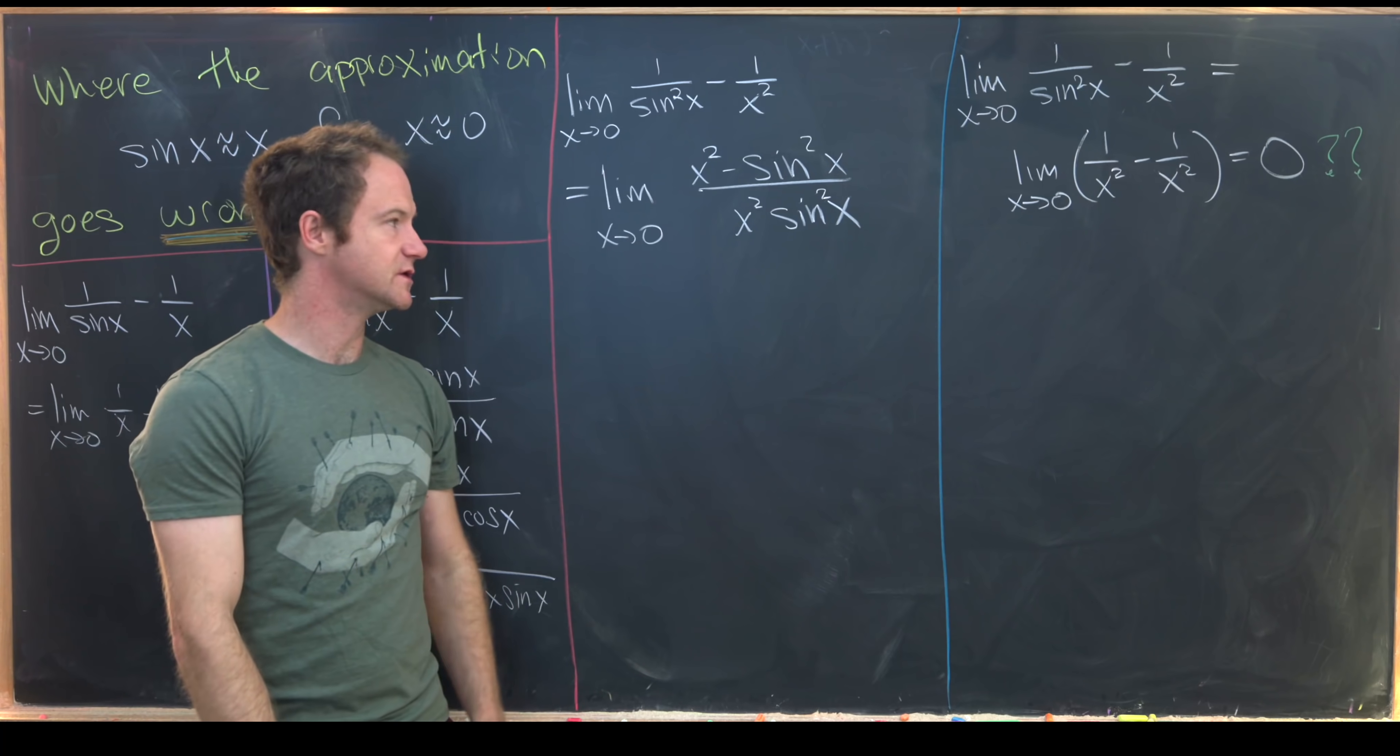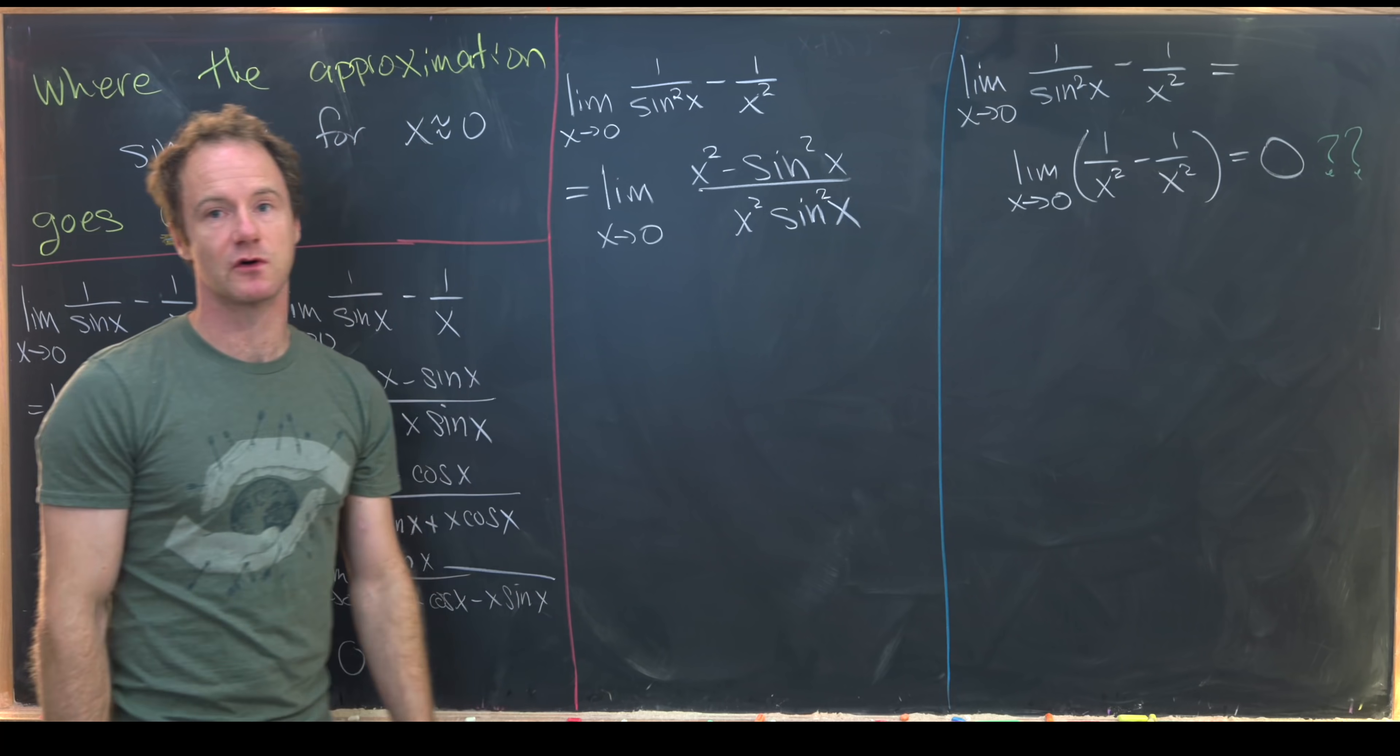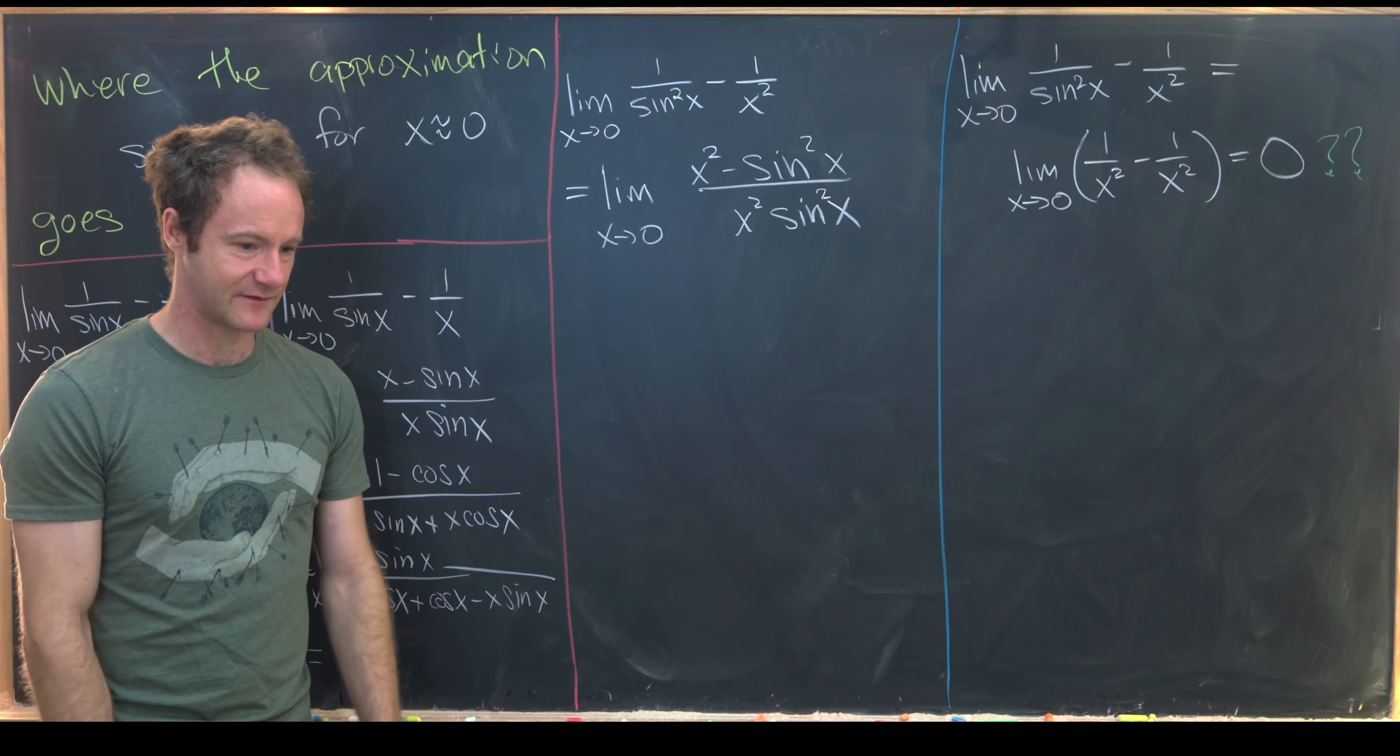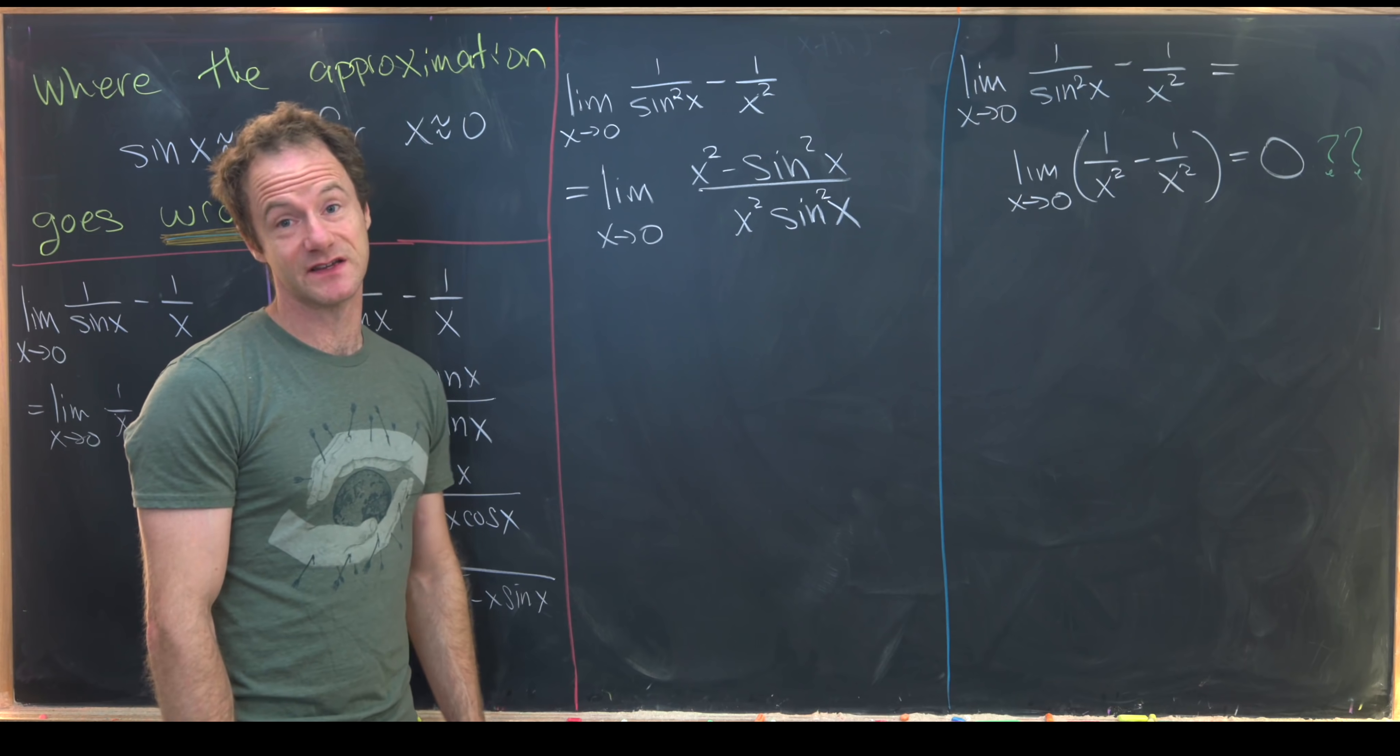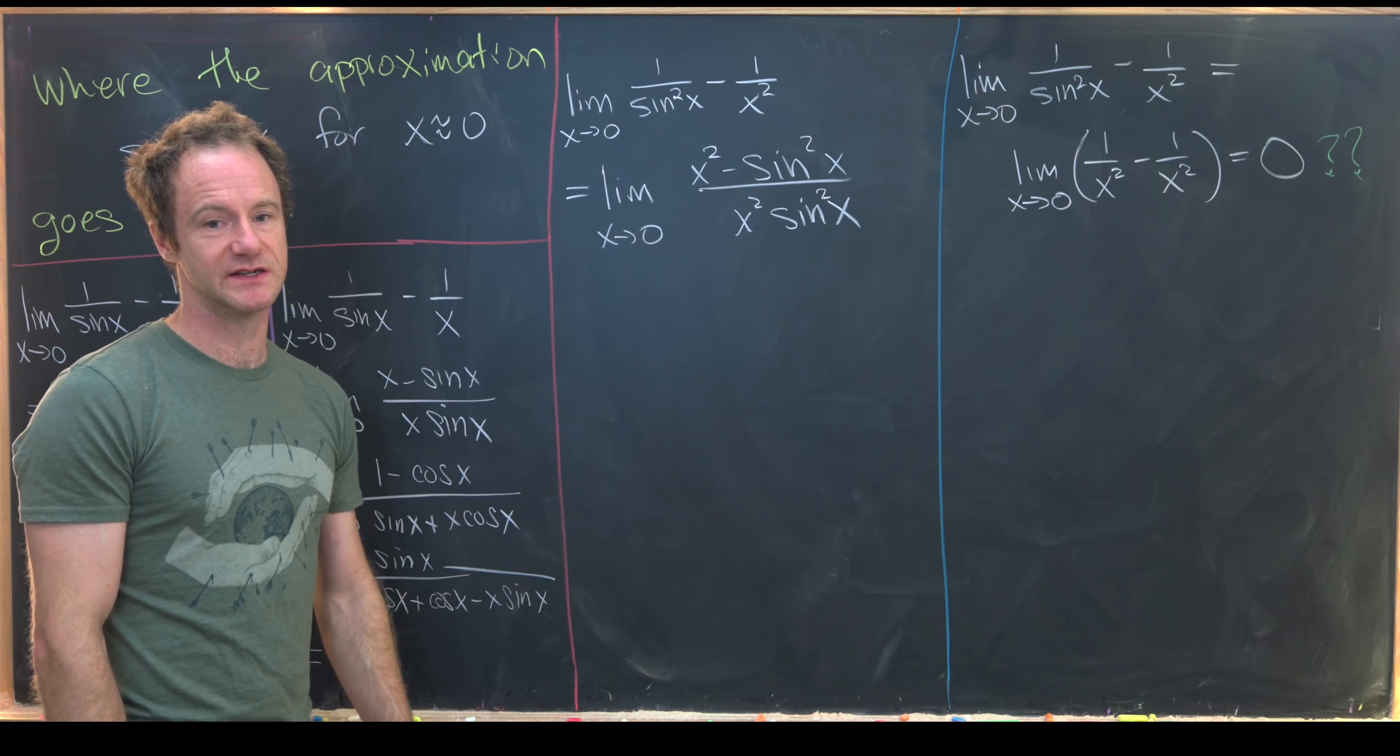And now there's a bit of a trick. We don't really want to use L'Hopital's rule, even though it would apply here because we have type zero over zero. But this denominator just becomes more and more complicated after taking the derivative. I think you will probably end at a point where you can find the solution, but it's a long journey and there's probably an easier way to do it.